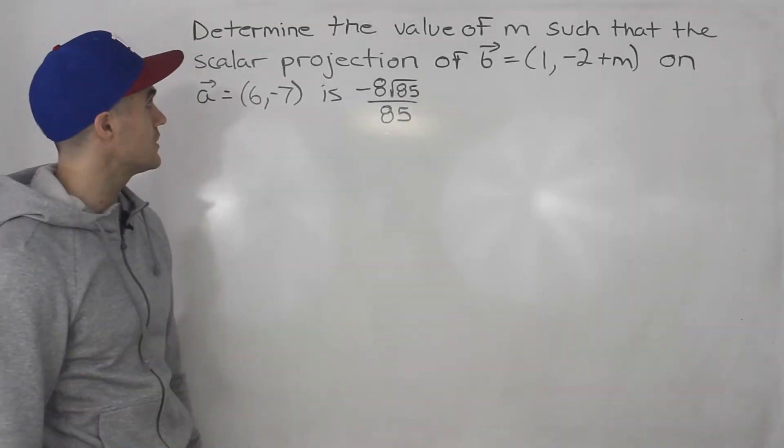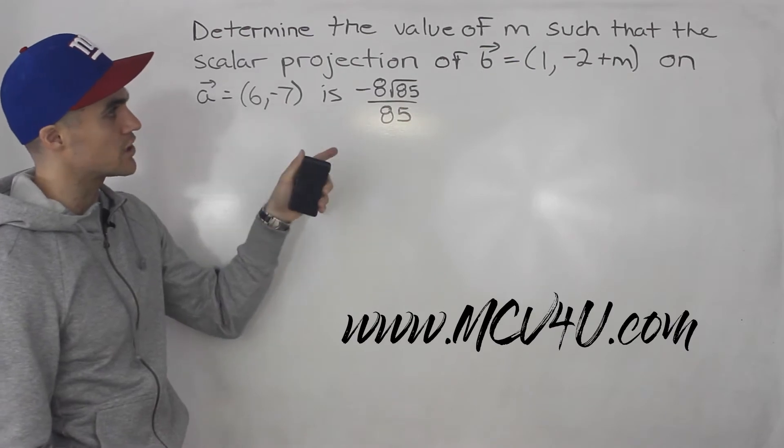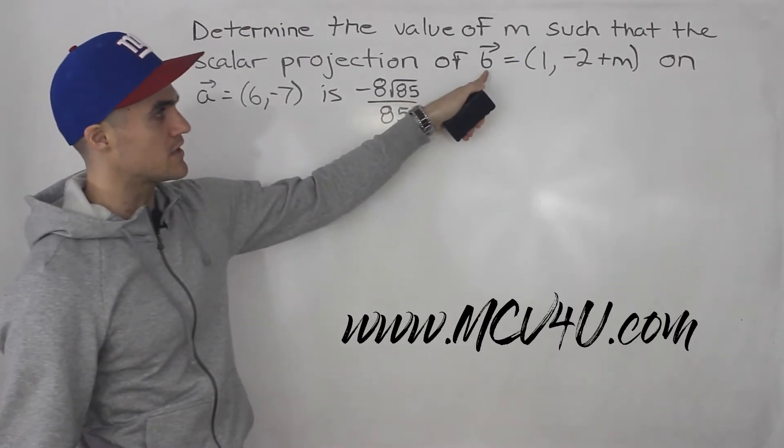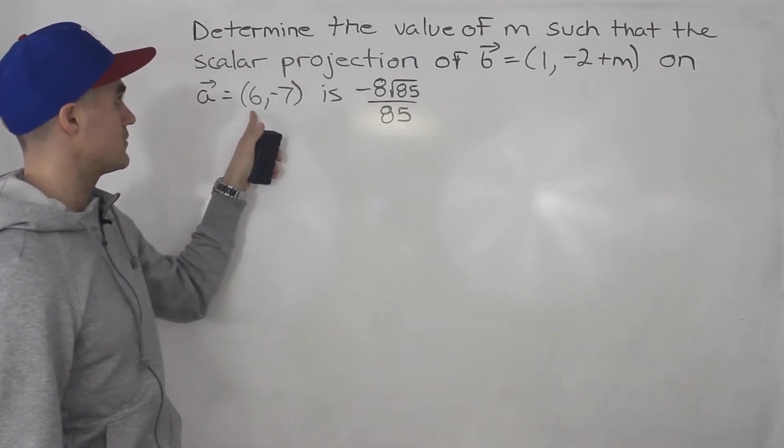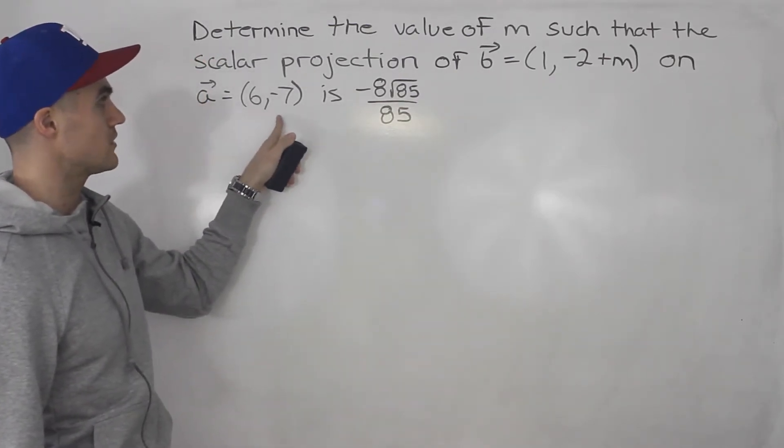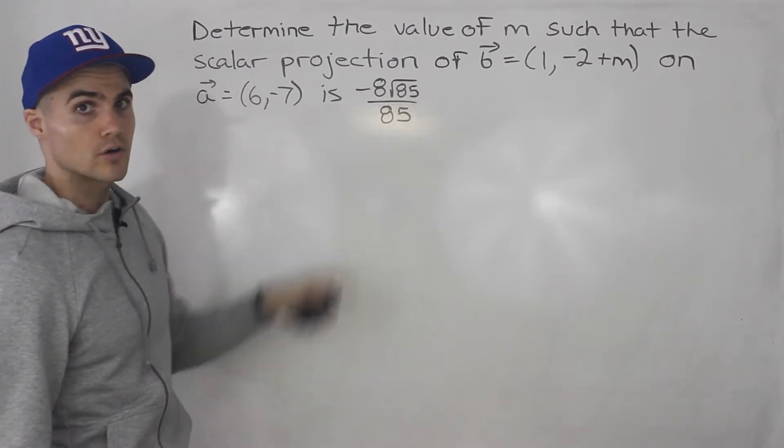Welcome back, everybody. Moving on to the next question, we have to determine the value of m such that the scalar projection of this vector b, which has components 1 and -2+m, on vector a, which has components 6 and -7, is -8√85/85.